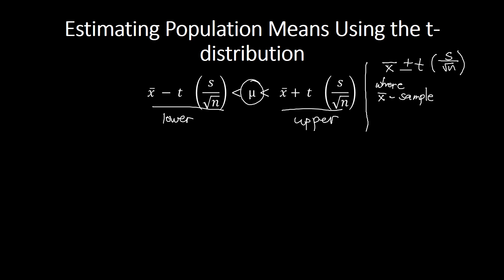Note the difference between the population mean symbol (μ) and the sample mean symbol (x-bar). In our formula, x-bar is the sample mean. The t is the t-value from the t-distribution, which requires the level of significance, the type of test (one-tailed or two-tailed), and the degrees of freedom (df). S is the sample standard deviation, and n is the sample size.